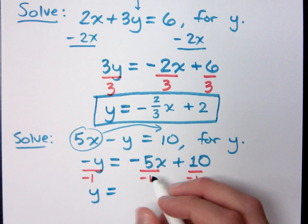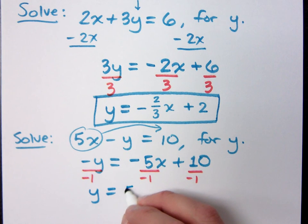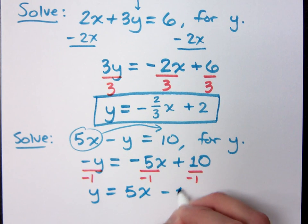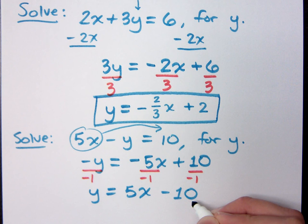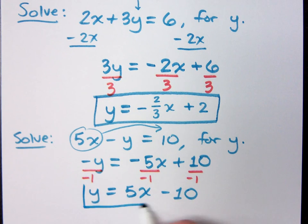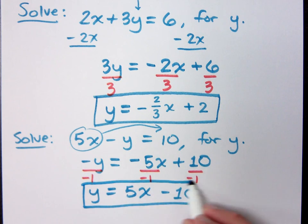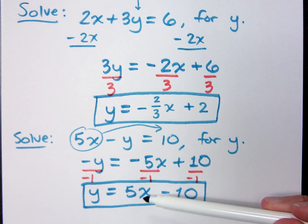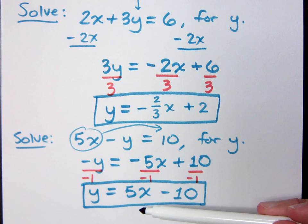So, y equals what? Positive 5x minus 10. Positive 5x minus 10. Y is completely by itself. And what this allows us to do in the next chapter. This will allow us to, given any value of x, I can just plug it in here and instantly get the y value. I wouldn't have to solve for y every time.